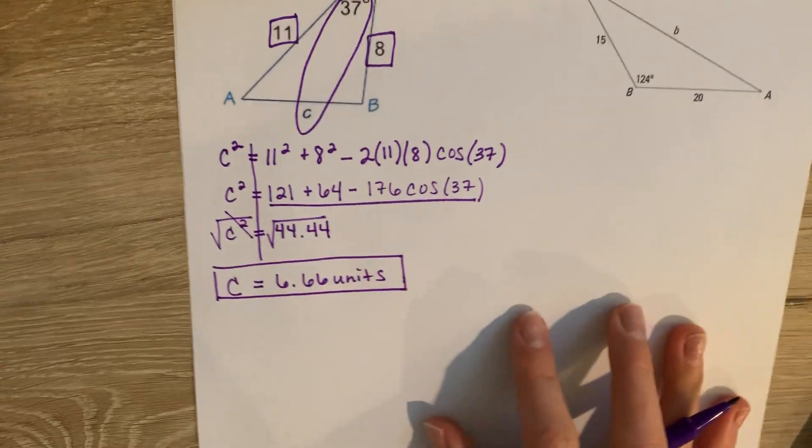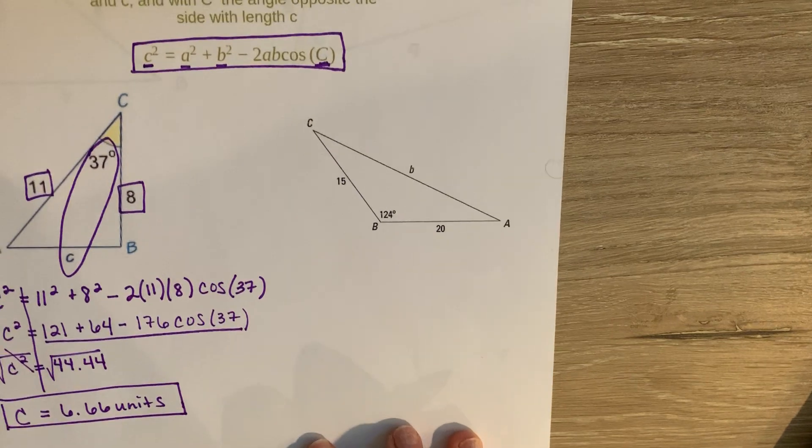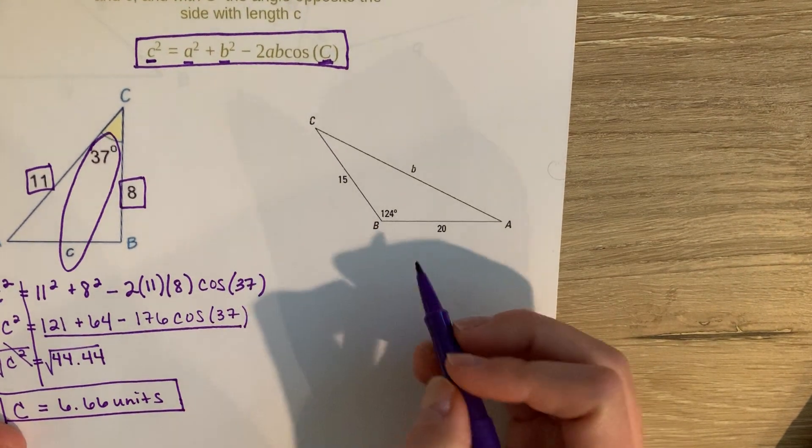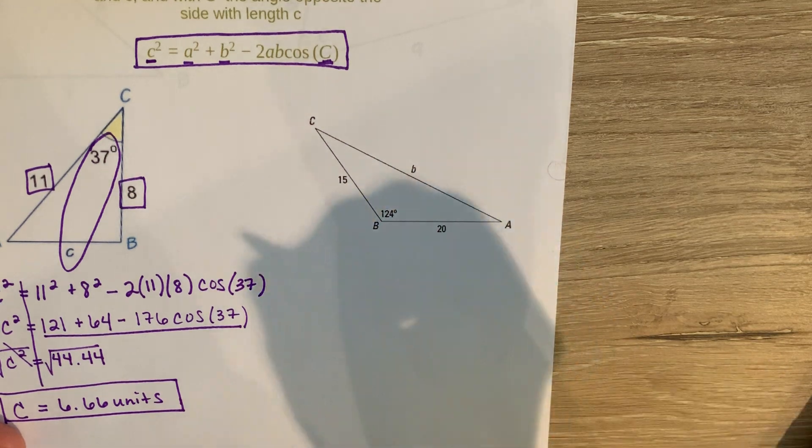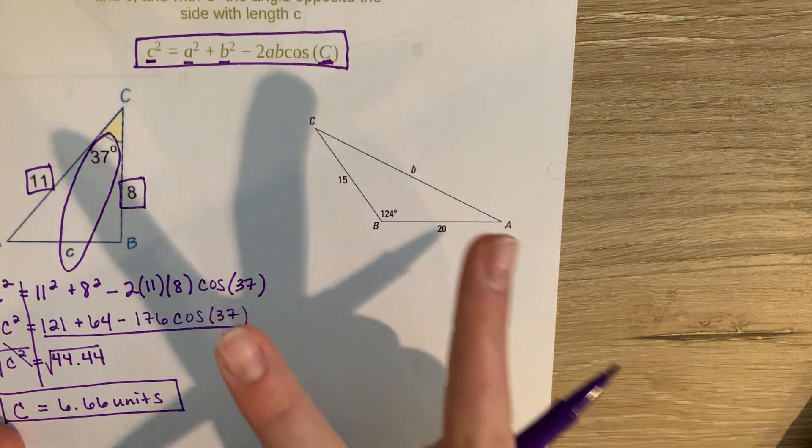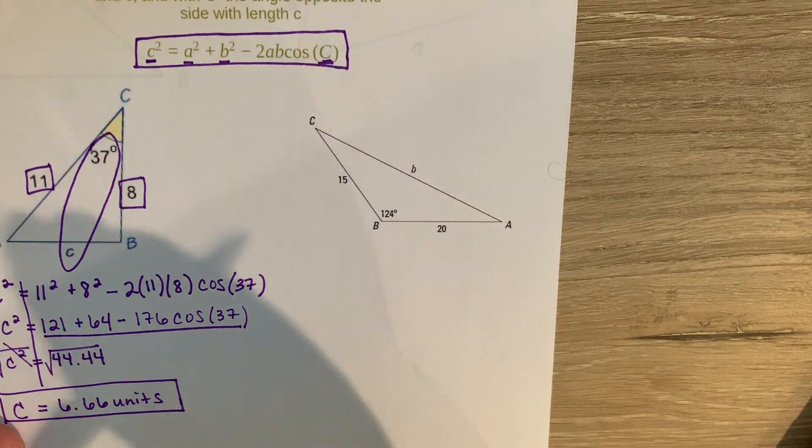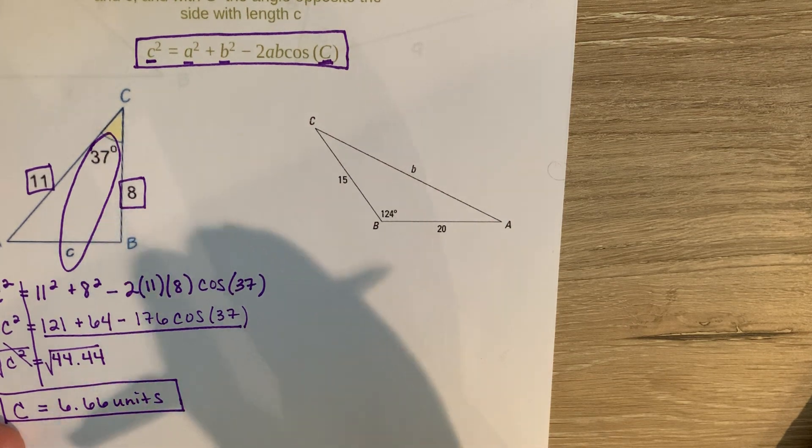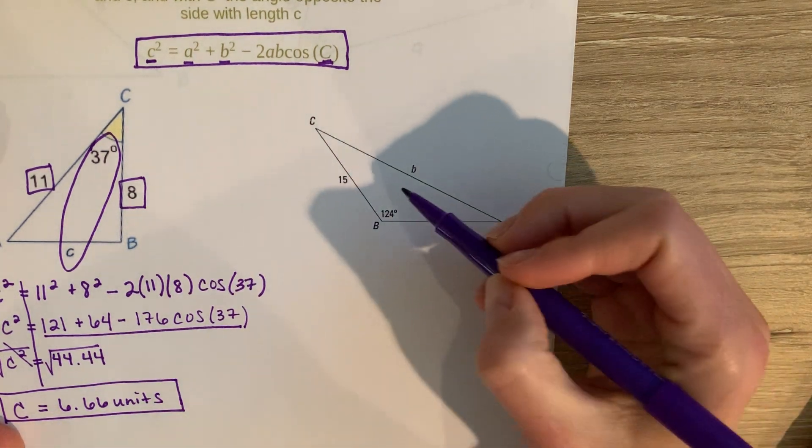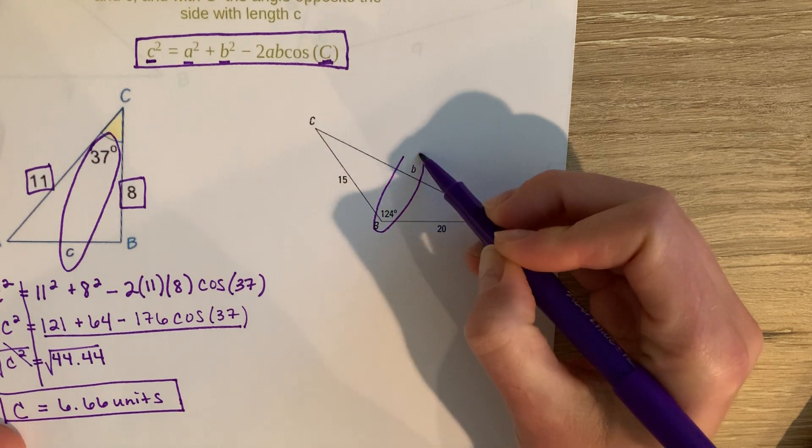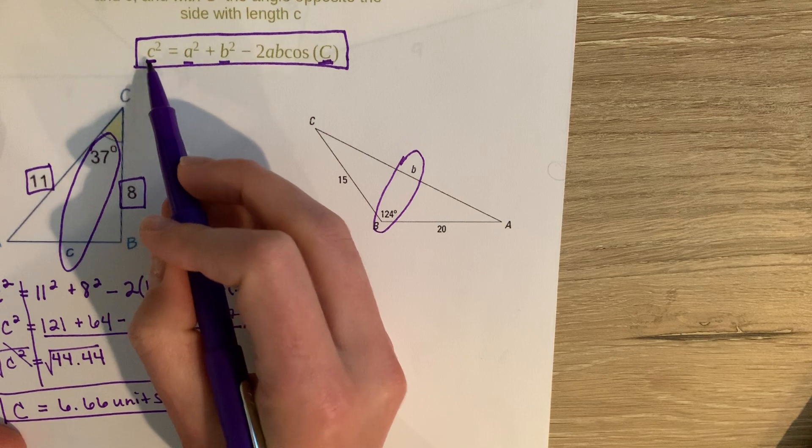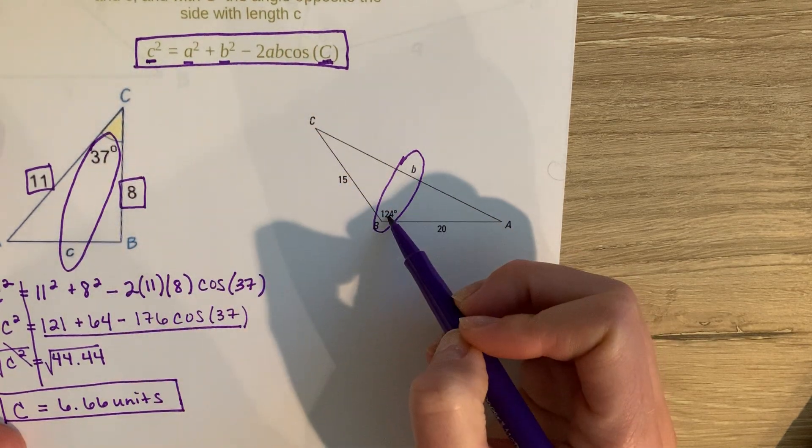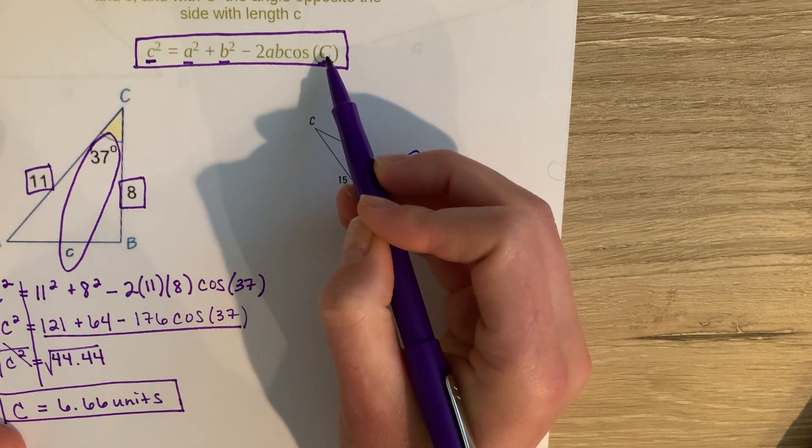Let's do the other example. So in this example here, again, find the pair that you have first. If you have two pairs, use the law of sines, because I think it's a lot easier. So here we have our pair, the b's. So that means those pair, that pair is going to go in for my c here. That means 124 is going to go in for my c, and b is going to go in for my c here.